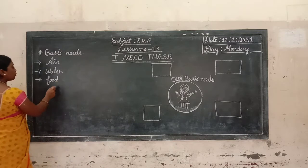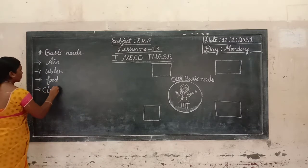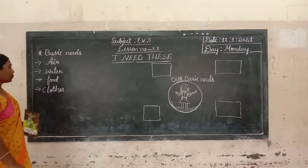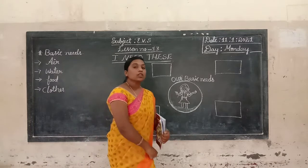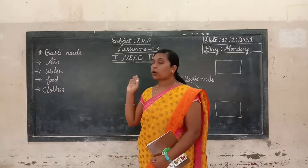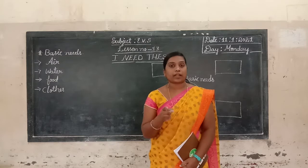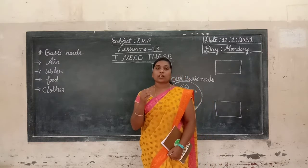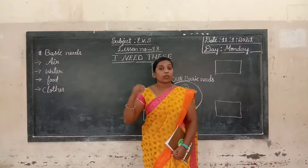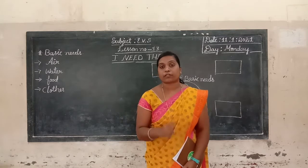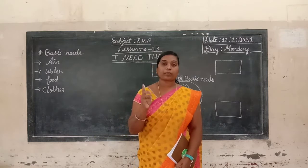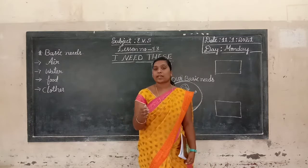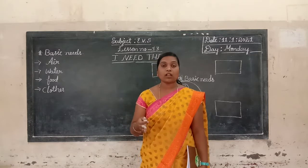Clothes — C-L-O-T-H-E-S — is also very important. Clothes protect us from insects. Why do we need clothes? Clothes protect our body from heat of the sun, cold, wind, and rain. And also it keeps us from insect bites. That's why we need clothes.